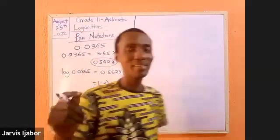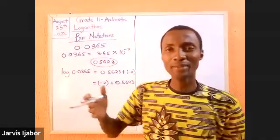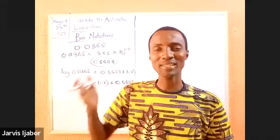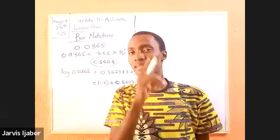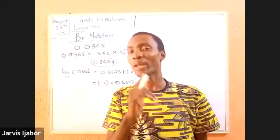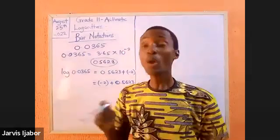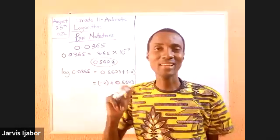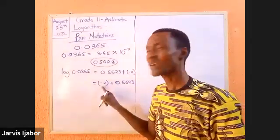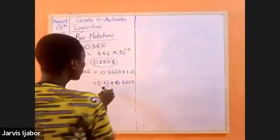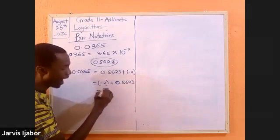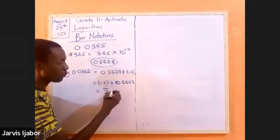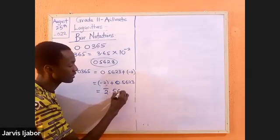Remember that when we were writing the log of a number in terms of the characteristics and the mantissa, we had said that the characteristics can be positive or negative. So when we obtain the negative, the characteristics are negative, we don't just write it like this. To be able to combine two of them together, we write it as bar 2.5623.